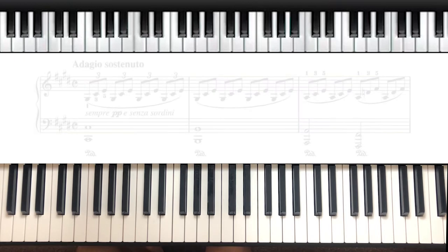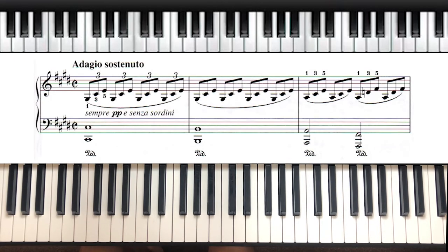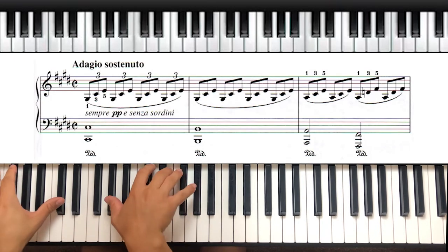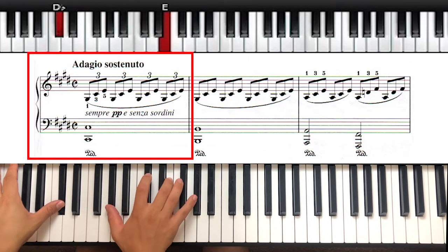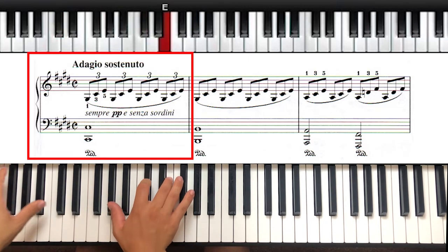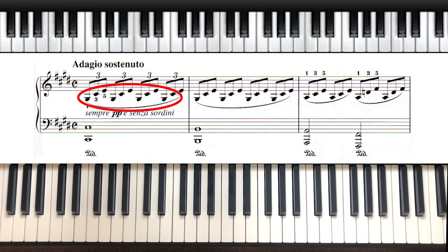To show you what this looks like in a piece, here's a section from Moonlight Sonata by Beethoven. As you can see, they don't add in the lines until you get to that particular note, and the line is only drawn to cover that small part.